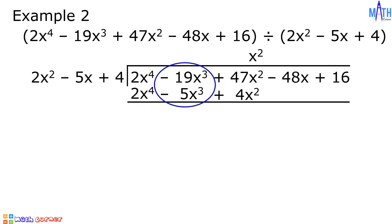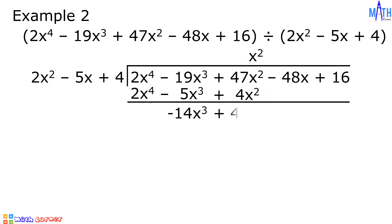Negative 19x cubed minus negative 5x cubed equals negative 14x cubed. 47x squared minus 4x squared equals positive 43x squared. Then bring down negative 48x plus 16.